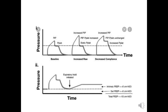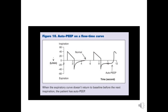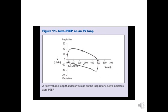When peak inspiratory pressure increases without an increase in plateau pressure, it points to increased airway resistance. When peak inspiratory pressure increases along with an increase in plateau pressure, it depicts decreased compliance. The flow-time curve shows auto-PEEP when the expiratory limb does not return to baseline before the next inspiration. The flow-volume loop with auto-PEEP shows that the loop does not completely close.